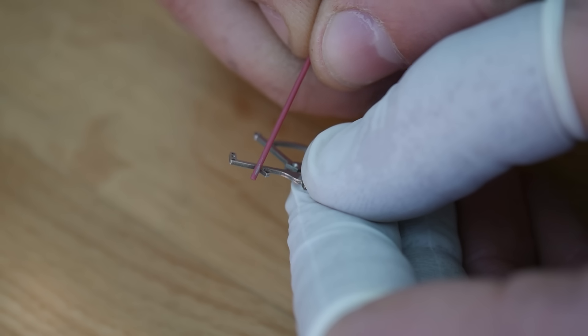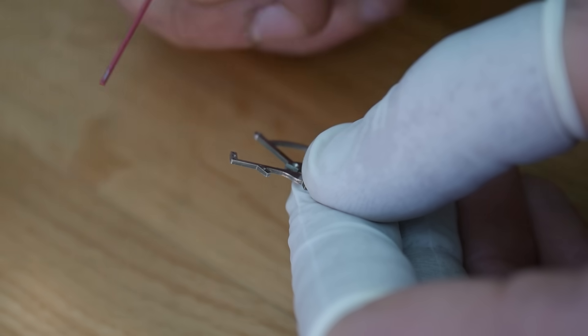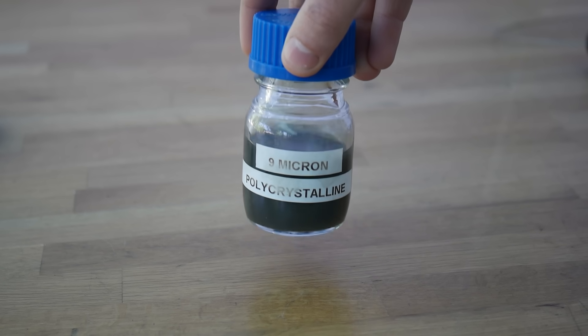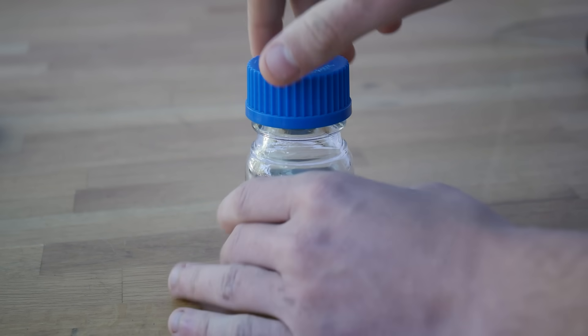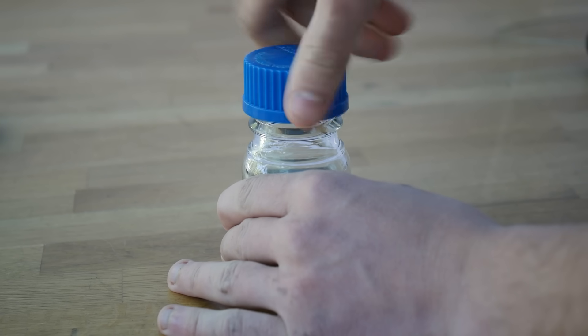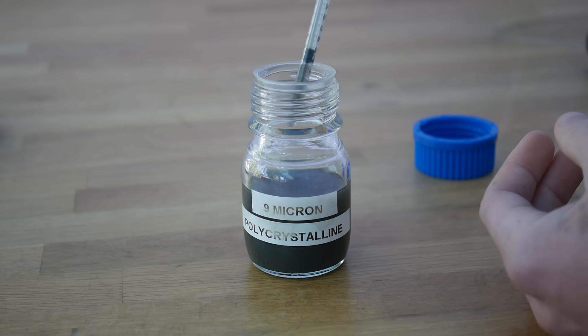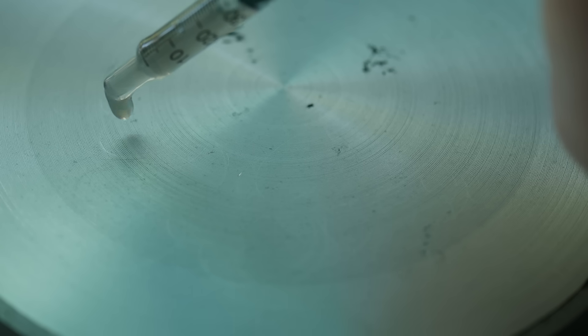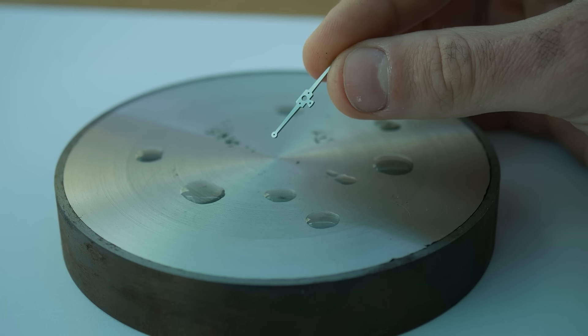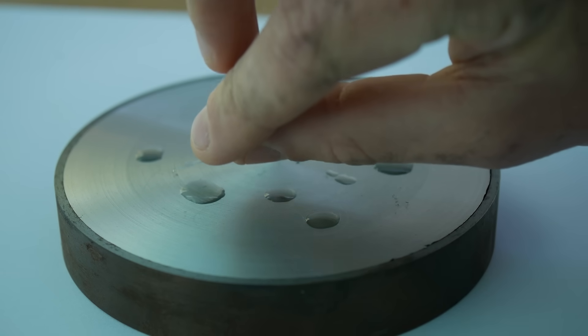In a previous video, I've talked about the best time to finish parts, and I've decided to apply a reasonable finish at this stage and revisit later once I've proved the movement works. I use diamond suspension on a tin lap to remove the grinding marks and bring the parts of the cage to a rough polish finish.